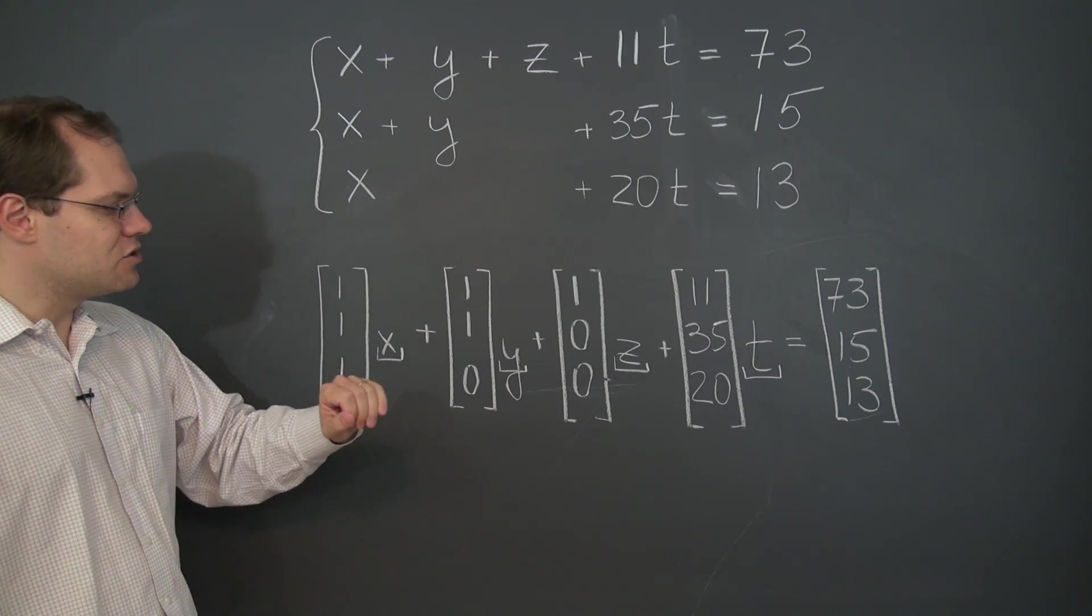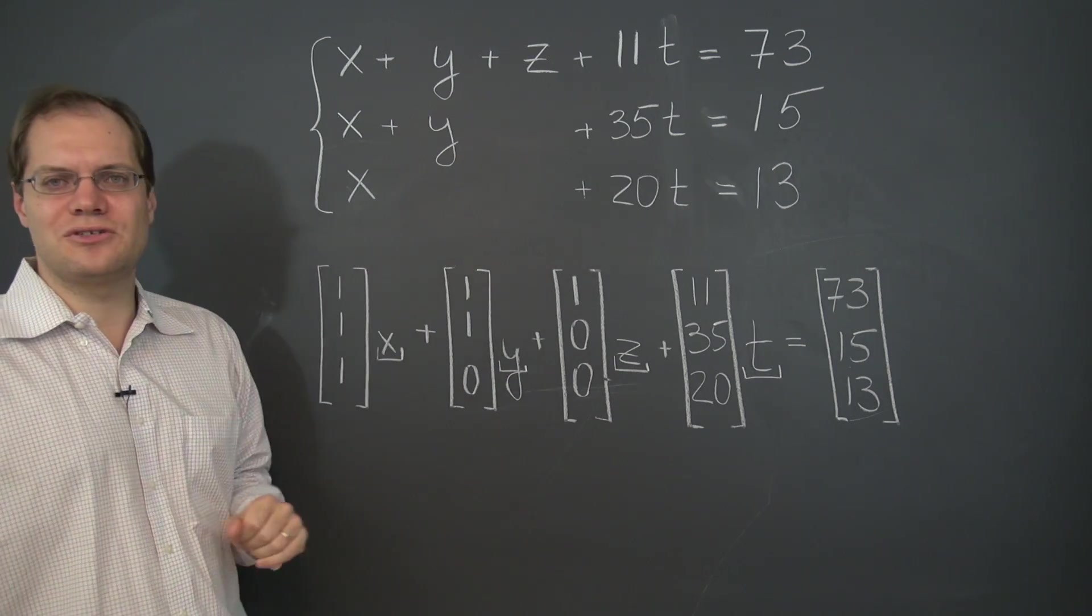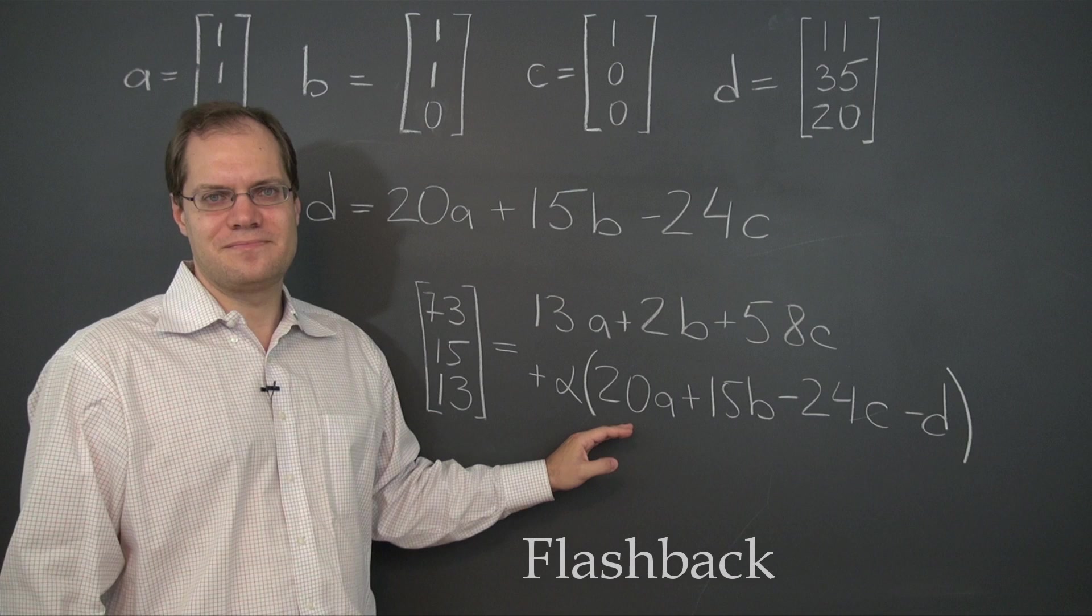And the solution that we obtained in this problem is actually the solution to this problem. And it is x equals 13 plus 20 alpha,